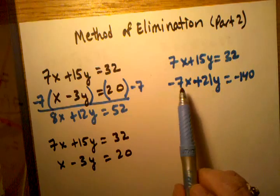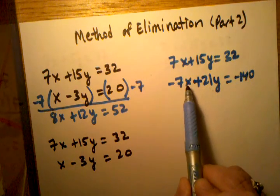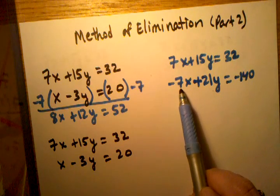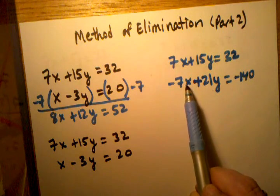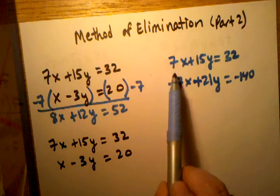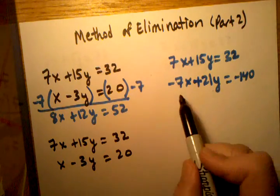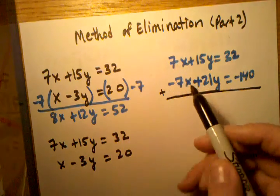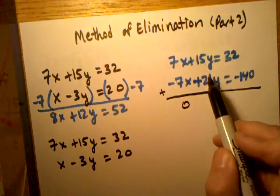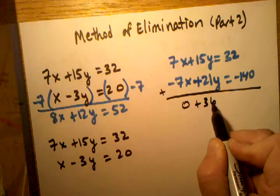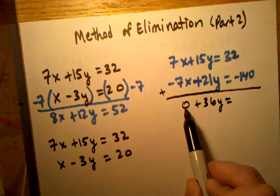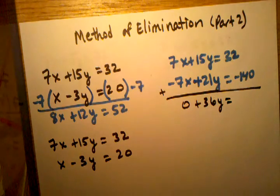So what I've done now is I've rewritten the second equation in a way where I have a negative 7 as my coefficient for x and when I add these two equations together, 7 plus negative 7 gets me 0 and then 15 plus 21 gets me 36y. I can see I've already eliminated the x variable and so that could work but that's not the only way I have to go about it.